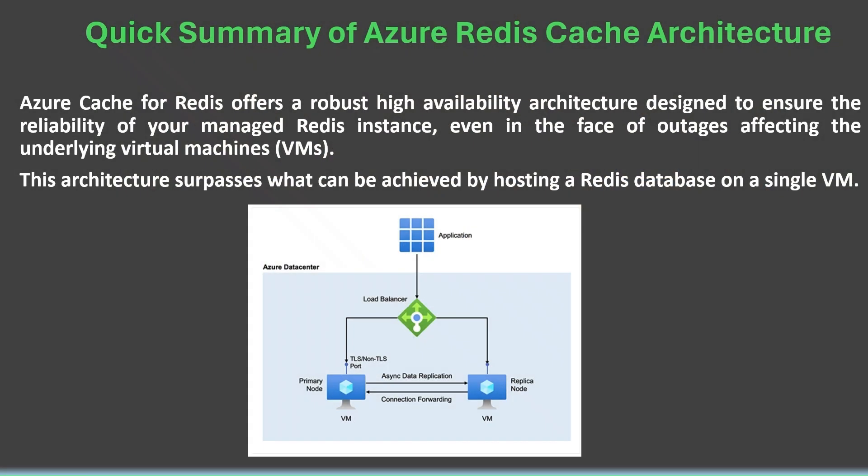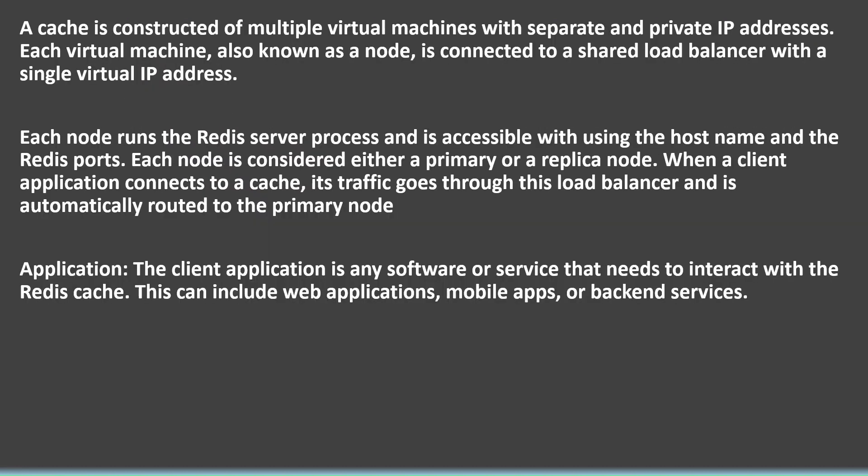Azure Cache for Redis offers a robust high-availability architecture designed to ensure the reliability of your managed Redis instance, even in the face of outages affecting the underlying virtual machines. This architecture surpasses what can be achieved by hosting a Redis database on a single VM.